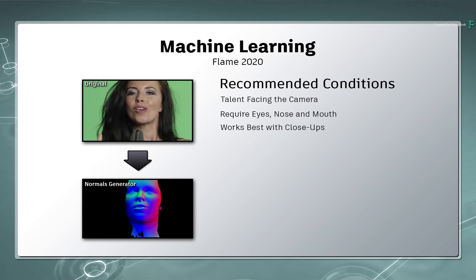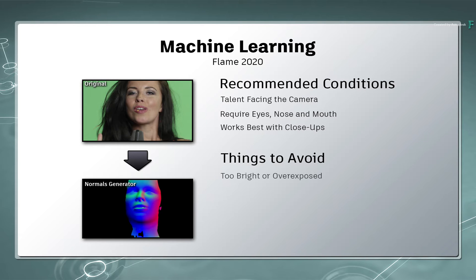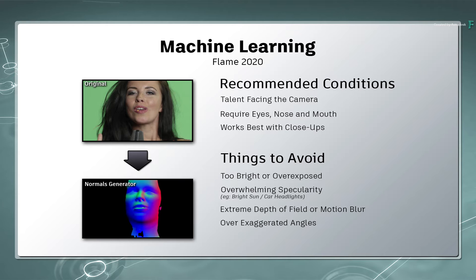You will see this when we look at face-normal mapping. It's impossible to guarantee a successful generation each time, but eventually you'll learn the machine learning's strengths and weaknesses and what content it works best on. As guidelines, we currently recommend avoiding overblown skies, heavy specularity, extreme depth of field, extreme motion blur, crazy camera angles, and night shots where depth can't truly be determined.